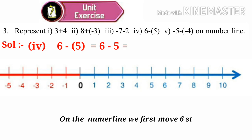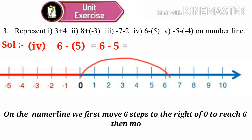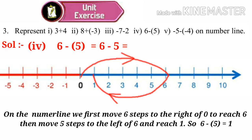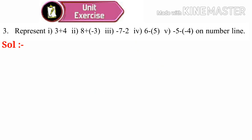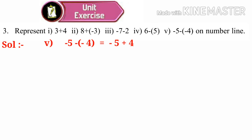Number 4: 6 minus 5 is equal to how much? On the number line, we first move 6 steps to the right of 0 to reach 6, and then move 5 steps to the left of 6 and reach 1. So 6 minus 5 is equal to 1. Fifth problem: minus 5 minus (minus 4). Minus minus is plus, so minus 5 plus 4.